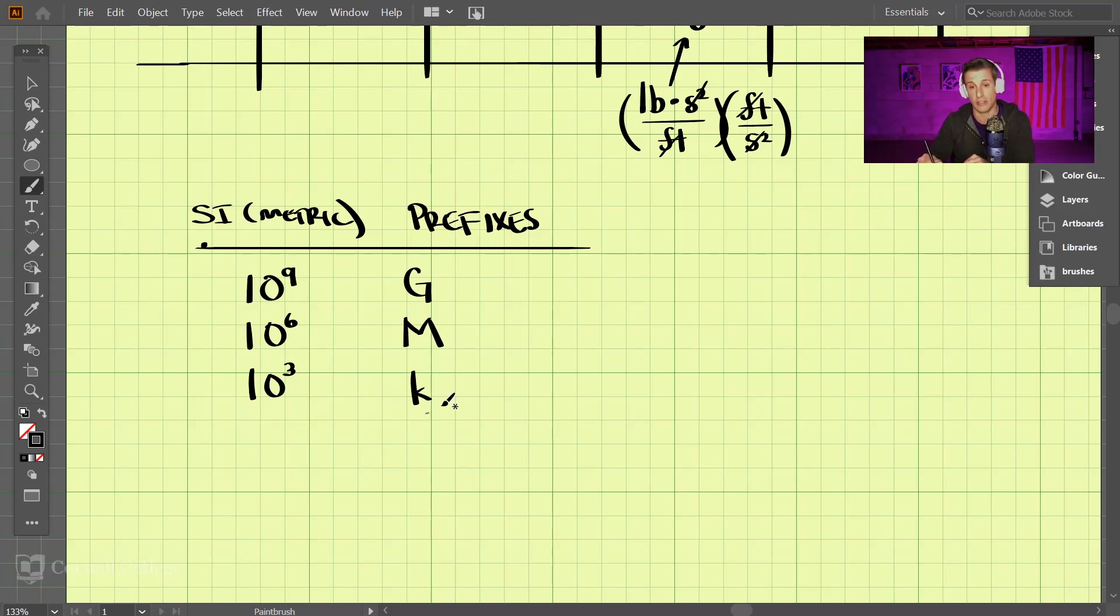All right. We have 10 to the negative third, which is a lowercase m, which is milli. All right. So make sure you're using your capital M's and lowercase m's differently here because they mean different things. 10 to the negative sixth, we use the symbol mu, and that stands for micro. And then lastly, 10 to the negative ninth. All right. So something very small here. We use the small letter n for nano, right? When we talk about things being nano size, they're super small.